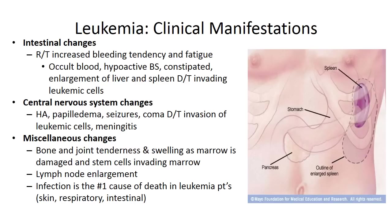Intestinal changes may occur related to increased bleeding tendency and fatigue. Patients may have positive hemoccult tests or occult blood in their stool. Hypoactive bowel sounds and constipation may also be seen, along with enlargement of the liver and spleen from leukemic cell invasion. A picture illustrates how significantly enlarged the spleen can become in its left upper quadrant position.